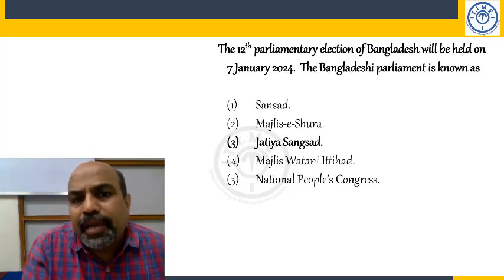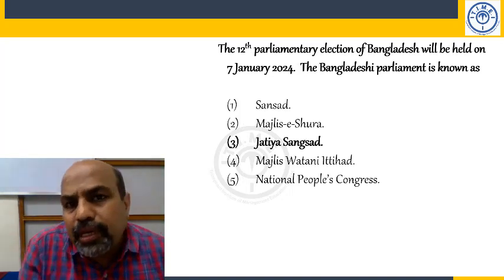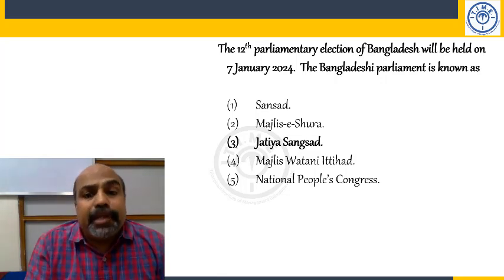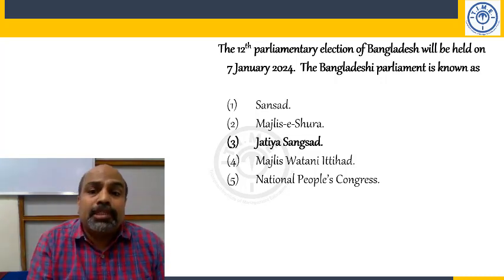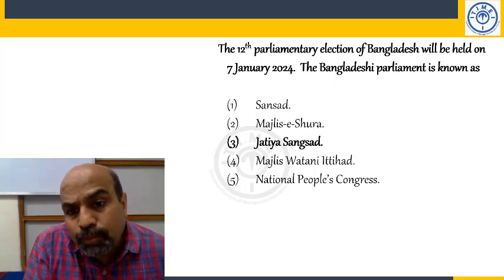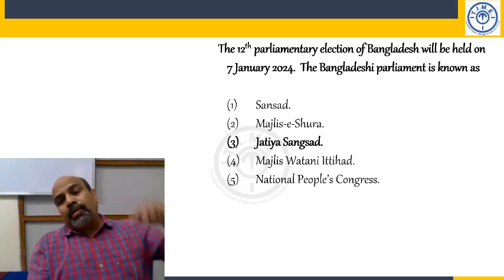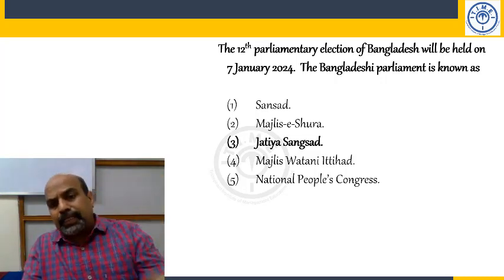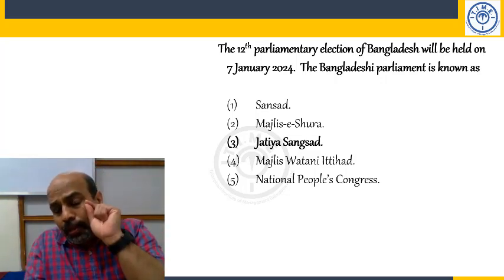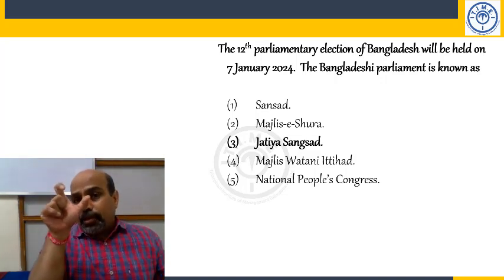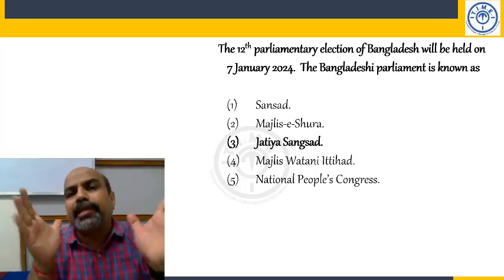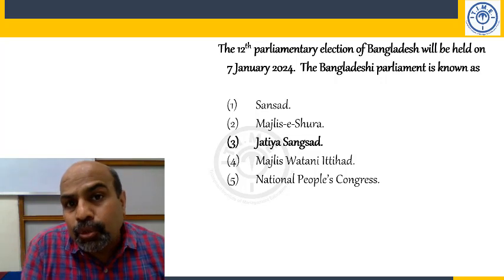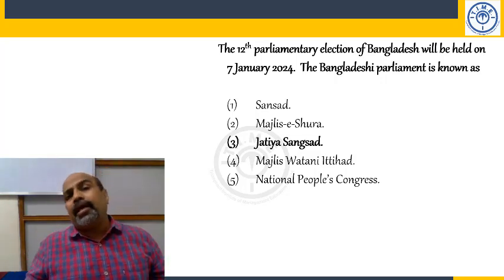The 12th parliamentary election of Bangladesh will be held in January next year. The Bangladeshi parliament is known as the Jatiya Sangsad. India's parliament is the Sansad; Pakistan's is the Majlis-e-Shoora; Iran's is the Majlis-e-Vatani Ittihad; and China's is the National People's Congress. The Jatiya Sangsad is a beautiful building designed by Louis Kahn — the same architect who designed IIM Ahmedabad. Kahn was born in Estonia but became an American citizen.